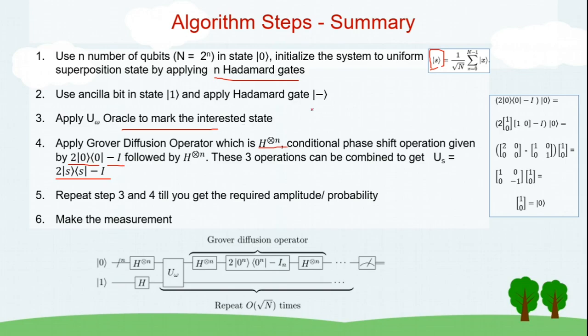After marking it you have to increase the amplitude. That is done by Grover diffusion operator and Grover diffusion operator itself has got three steps in it. First is applying Hadamard gate then applying conditional phase shift operation and that is represented by this expression followed by another set of Hadamard gates. These three operations can be combined to represent like this. Why? Because applying Hadamard gates n times over ket 0 is nothing but this expression which is defined as ket s. That is why we are replacing ket 0 with ket s.